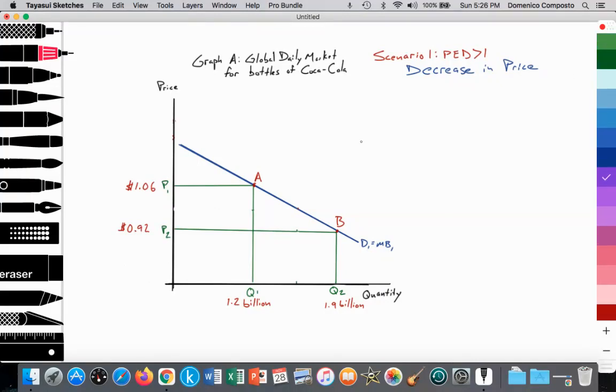So this video is going to focus on reducing price. The previous video was looking at an increase in price. And as we lower price from $1.06 to $0.92, according to the law of demand, we would expect an increase in the quantity of consumption, in this case from 1.2 billion to 1.9 billion, which is a movement along our demand curve. So this scenario, being scenario number two, the previous one being scenario number one, we're looking at an elastic demand curve, and we're going to decrease price and calculate PED.